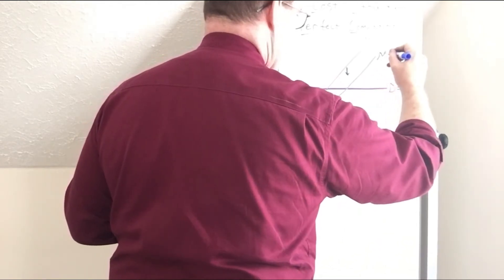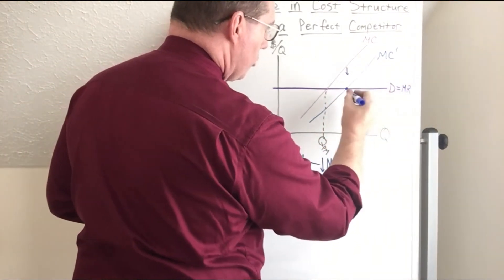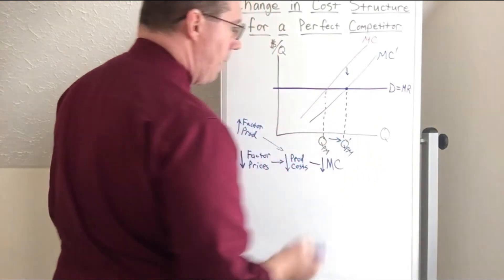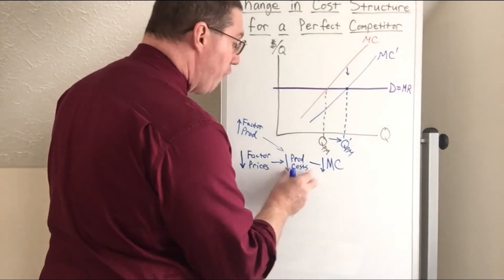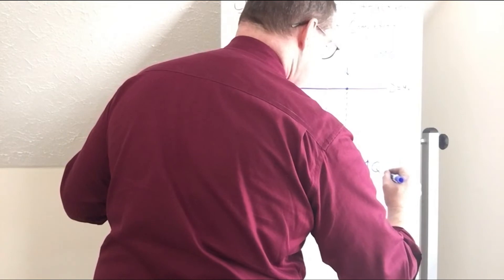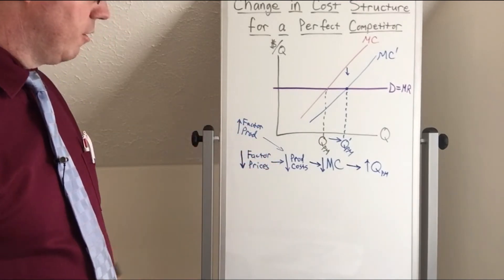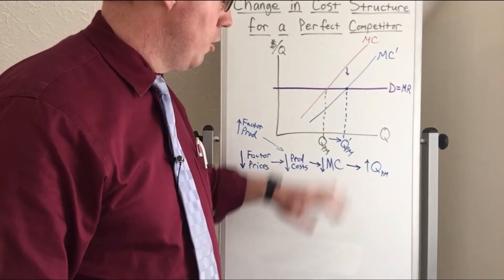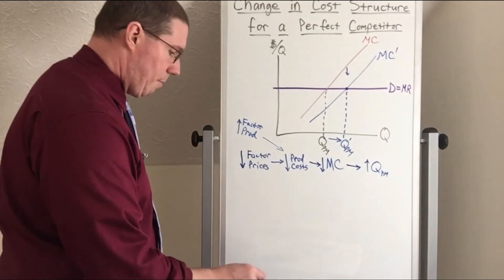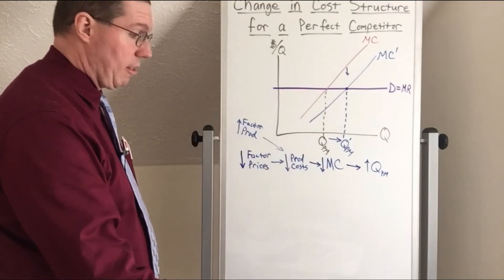Now look at what's happening to the profit maximizing quantity. This is now where marginal cost intersects marginal revenue, and this firm is going to increase production — Q prime, the profit maximizing quantity, is now going up. When it's cheaper for a firm to produce, they can produce more, resulting in a higher profit maximizing quantity. When a perfect competitor experiences a decrease in factor prices or an increase in factor productivity, it lowers production costs, decreases marginal costs, brings the curve down, and increases the profit maximizing quantity. The same thing happens for monopolies, monopolistic competition, and oligopoly.